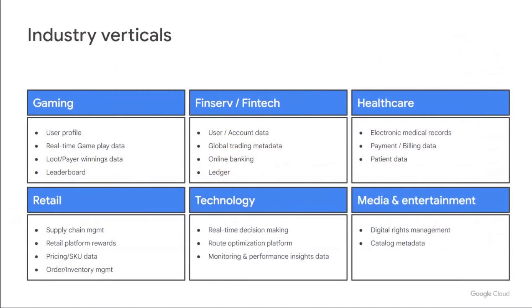In terms of industry verticals and use cases — by no means a comprehensive list, just calling out six. Spanner is extremely popular in gaming with user profiles, leaderboards, and real-time gameplay data. In FinServ, customers are building online digital banks on Spanner with full user account data, and ledgers are built on Spanner. In healthcare, we have full EMR systems being developed on Spanner. In retail, supply chain management and inventory data on Spanner are extremely popular. In technology, we have real-time decision-making workloads, and in media entertainment, digital rights management, catalog, and metadata use cases.